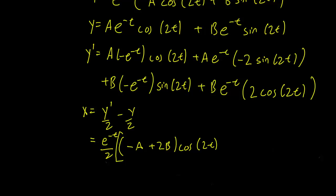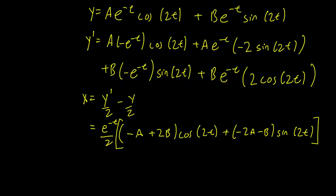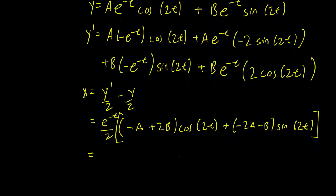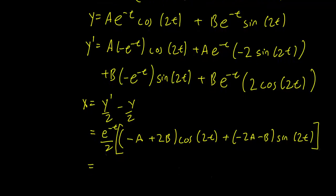The sine terms give minus 2a minus b from the y prime part. For the y over 2 term, every term in y has e^{-t}, so we factor that out with the 1 over 2, giving a cosine 2t plus b sine 2t.